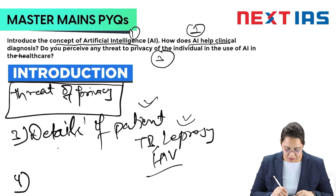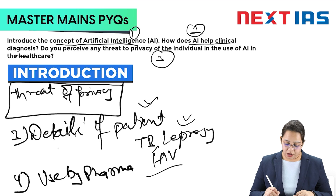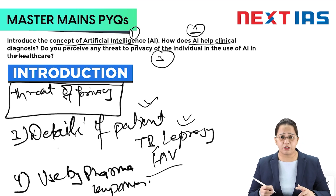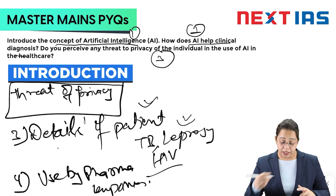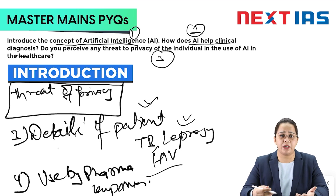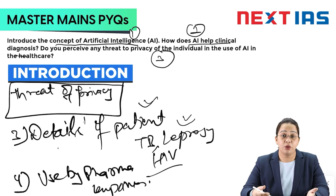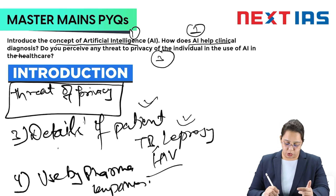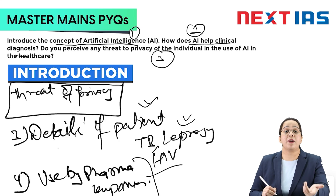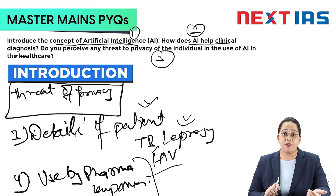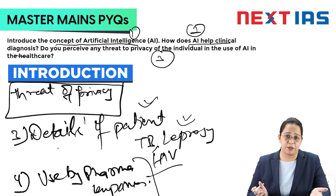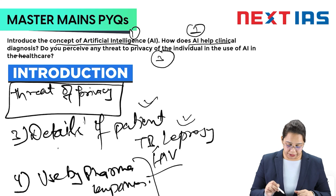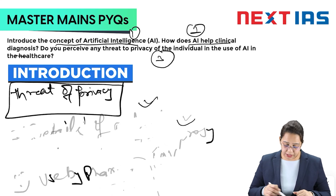The next point is that pharma companies can use patient data for better drug production. They might be taking data from different healthcare organizations and path labs. These institutions hold our data, and when pharma companies use or take that data, no consent is taken from us. Without our consent, data is shared with pharma companies, which is not acceptable. There is a clear threat that our data is shared without our knowledge.